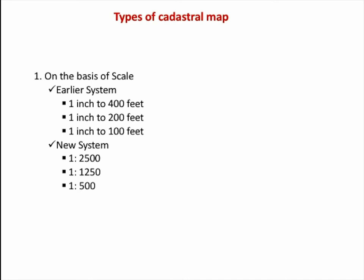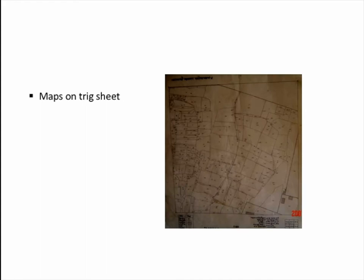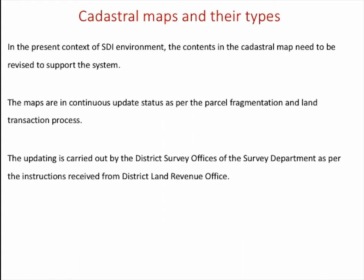Types of cadastral maps based on scale: the earlier system used 1:400 feet, 1:200 feet, and 1:100 feet; the new system uses 1:2500, 1:1250, and 1:500. These can be shown as graphical or numerical scale. Based on control points, free sheet maps are not prepared on a control point — they use scales like 1 inch to 100 feet or 1:200 feet — while trick sheet maps are prepared on fourth-order control points.